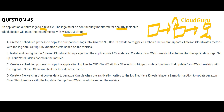The thumb rule for minimum effort is: use whatever AWS gives you as a ready-made service. CloudWatch Logs is provided by AWS, so we will install and configure the CloudWatch Logs agent on the application's EC2 instance. We collect CloudWatch metrics to monitor the application logs and set CloudWatch alerts on those metrics to constantly monitor them.